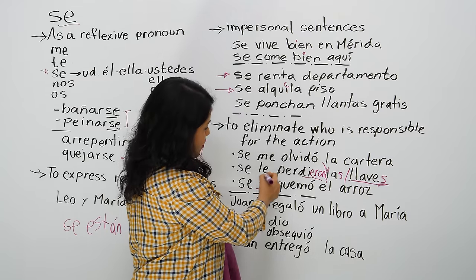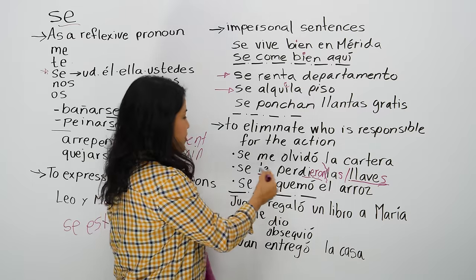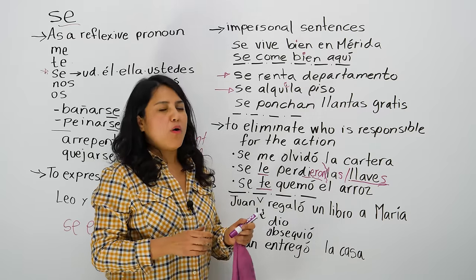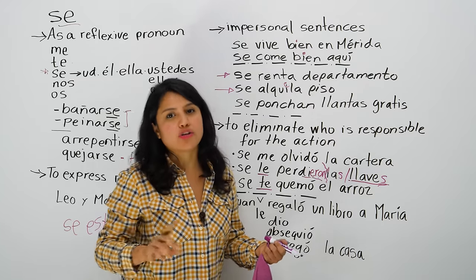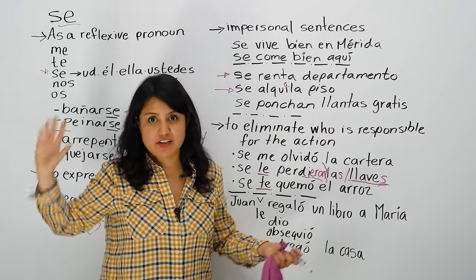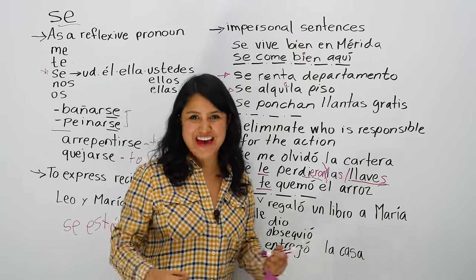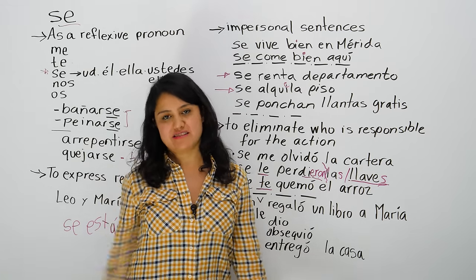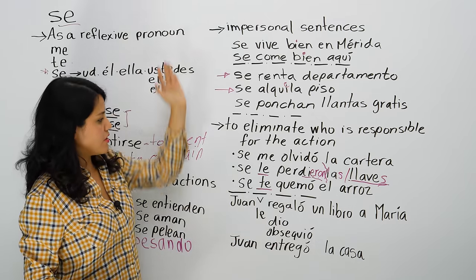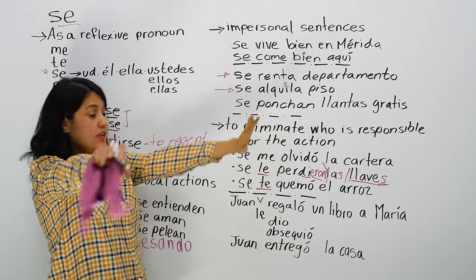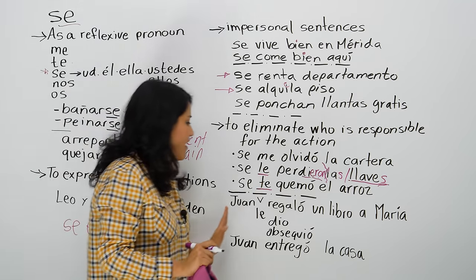Se te quemó el arroz — maybe this is a bit more pointing at someone, but not really directly. You say se le perdieron las llaves instead of Juan perdió las llaves — the keys just got lost. Instead of 'quemé el arroz' as an active way of saying it, you say se quemó el arroz — the rice got burned. You see how we go through different levels of impersonal until we make it seem it's not really our responsibility.